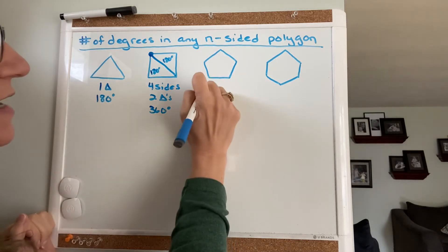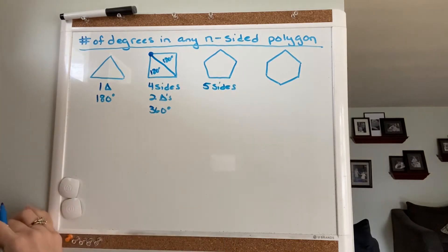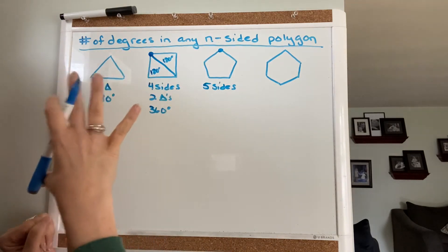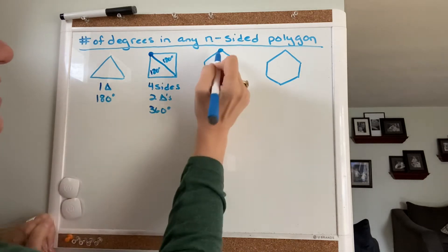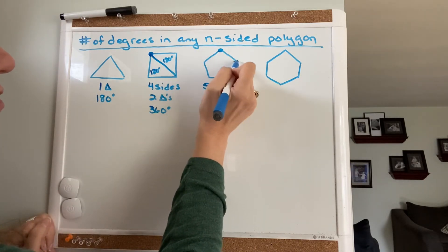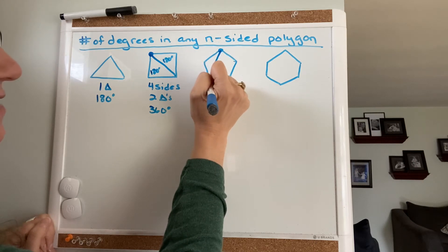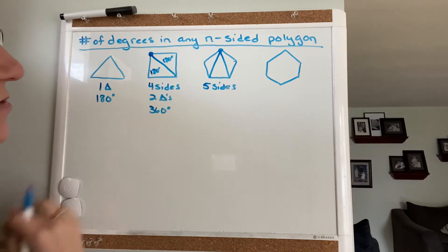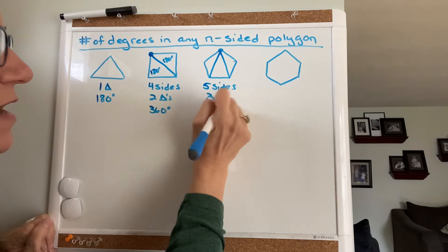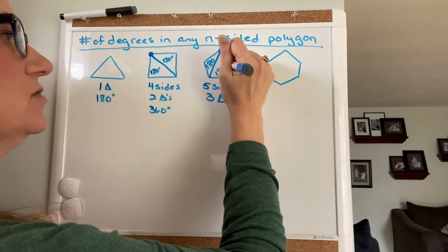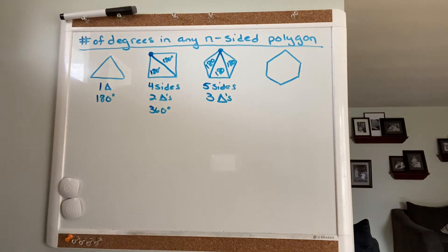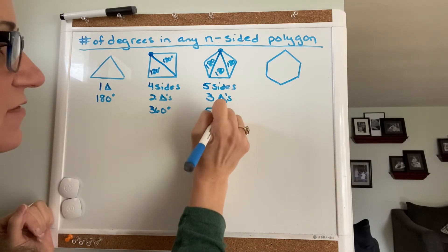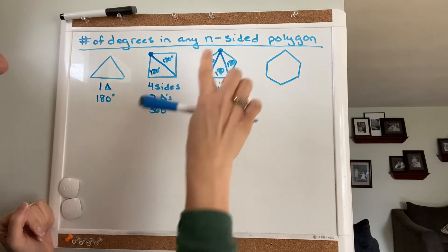Now the pentagon — a pentagon has five sides. If I choose one vertex and connect it to all four of the other vertices, two pairs are already connected by sides. So I connect this vertex to the remaining two. That gives me three triangles, each containing 180 degrees. So 180 times three — every pentagon contains 540 degrees.